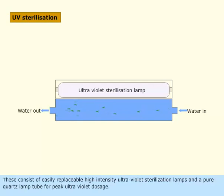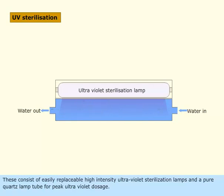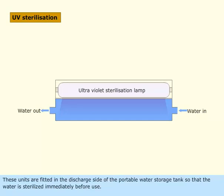These consist of easily replaceable, high-intensity ultraviolet sterilization lamps and a pure quartz lamp tube for peak ultraviolet dosage. These units are fitted in the discharge side of the potable water storage tank, so that the water is sterilized immediately before use.